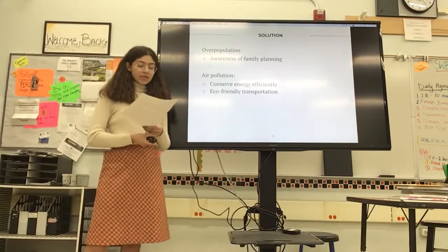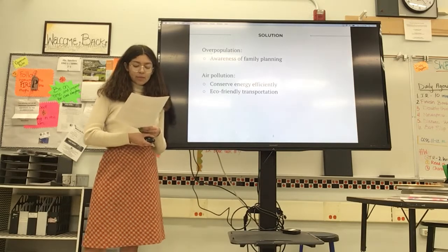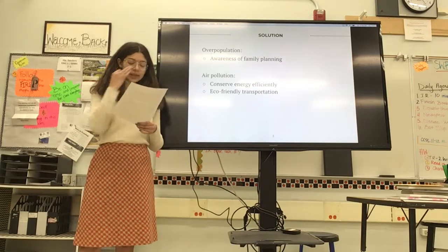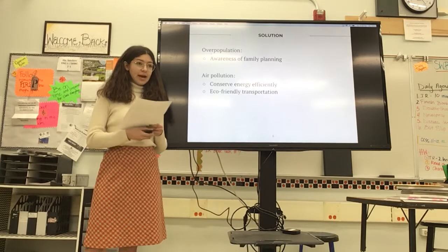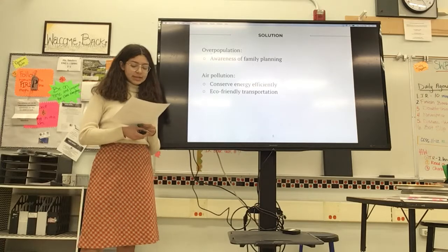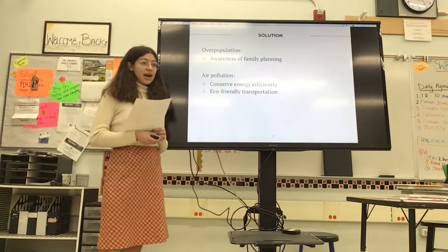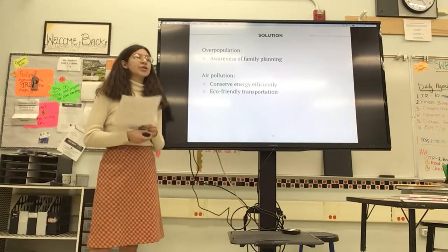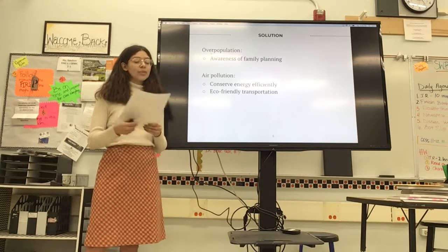Overpopulation can be solved by the awareness of family planning. Raising awareness among people regarding family planning and informing them about the serious after effects of overpopulation can help. A good way is to inform people about various safe sex techniques and contraceptive methods available to avoid unwanted pregnancy. As for the air, some easy things you can do are reduce your consumption of energy and use eco-friendly transportation methods such as public transport, biking, walking, or carpooling.